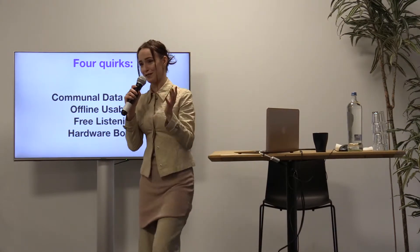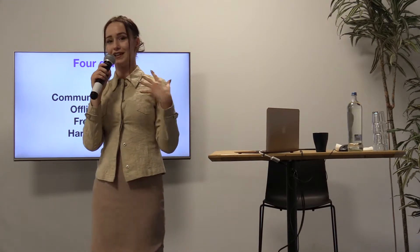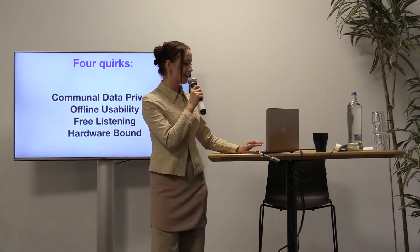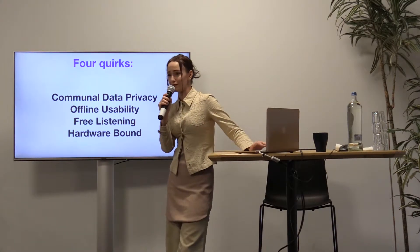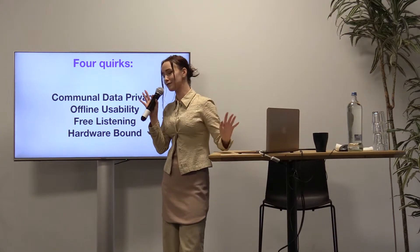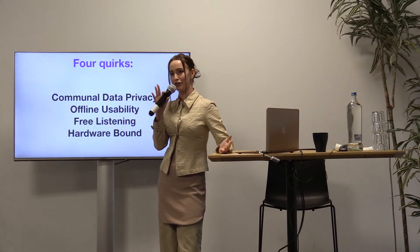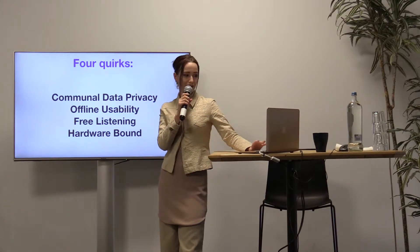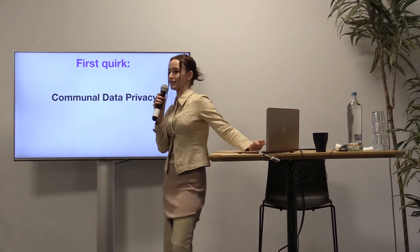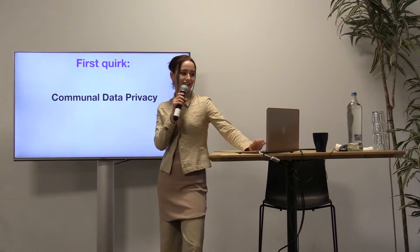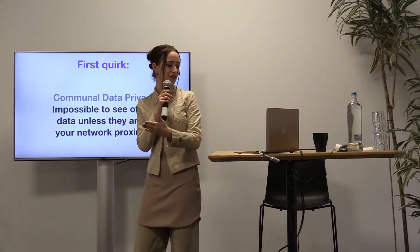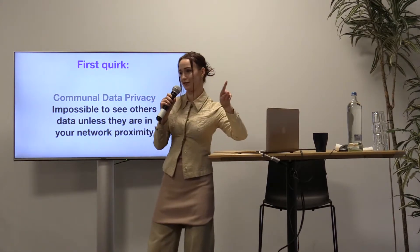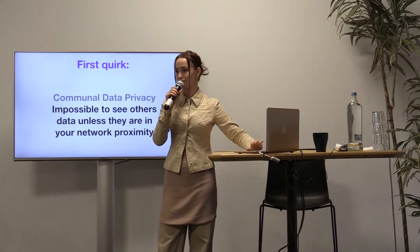Scuttlebutt has these interesting quirks that you wouldn't get from regular protocols. The first is communal data privacy: it's impossible to see others' data unless they're within the same network proximity — that's the friends-of-friends-of-friends thing we talked about.